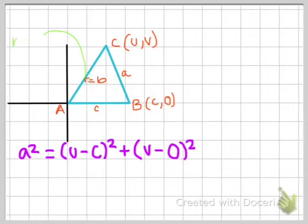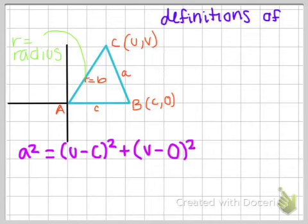Well, the Law of Cosines is derived from the distance formula. So you use the distance formula, and then now we're going to define what sine and cosine is.